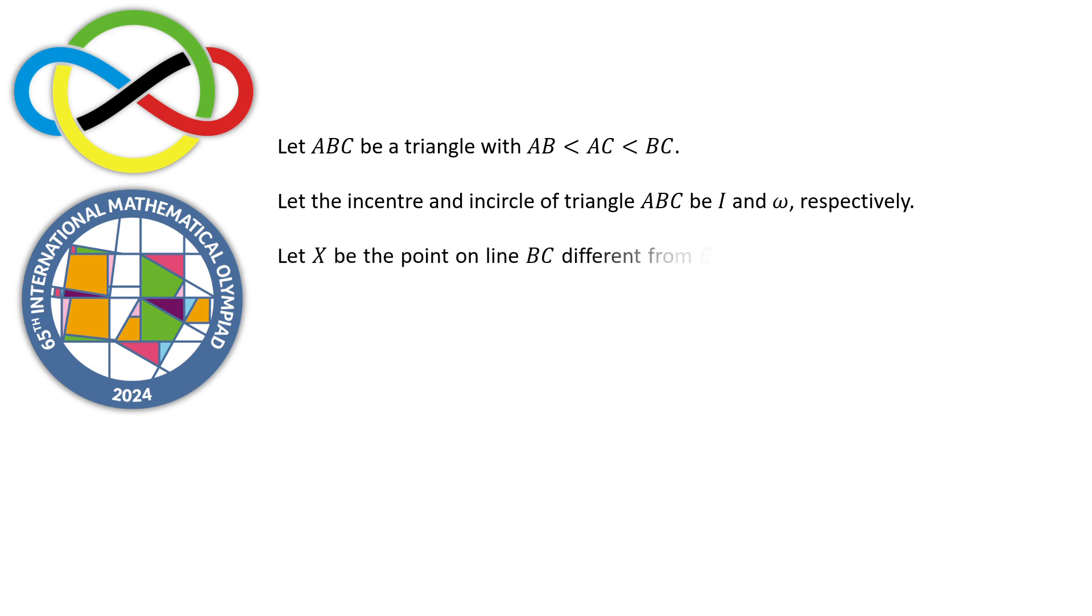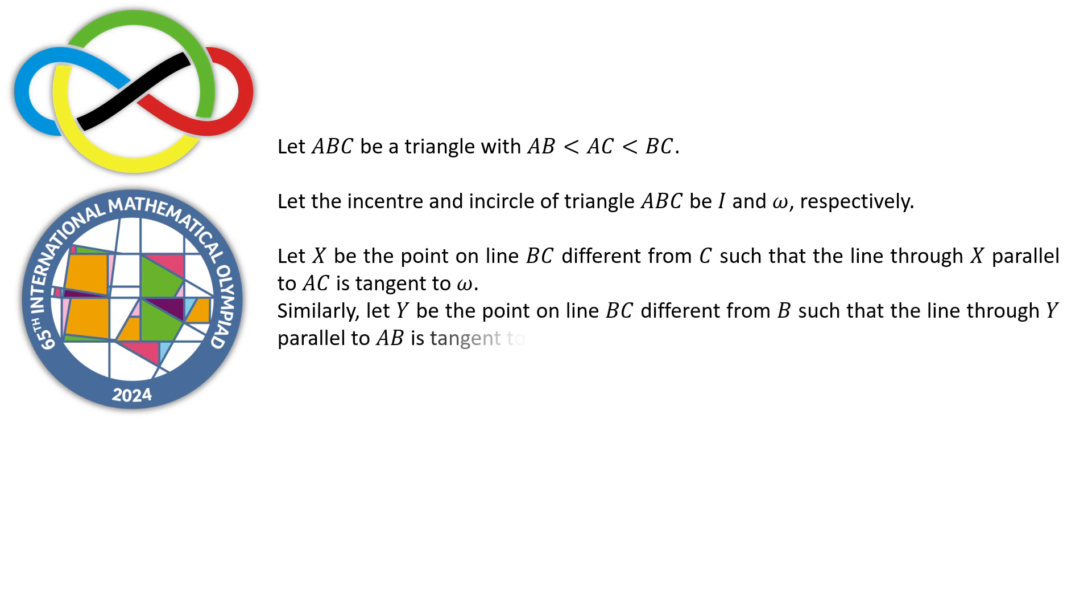Let X be the point on line BC different from C such that the line through X parallel to AC is tangent to omega. Similarly, let Y be the point on line BC different from B such that the line through Y parallel to AB is tangent to omega. Let AI intersect the circumcircle of triangle ABC again at P not equal to A.